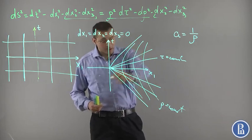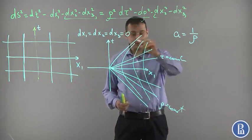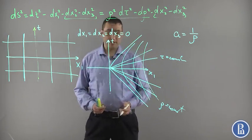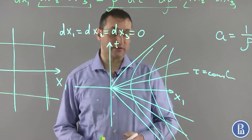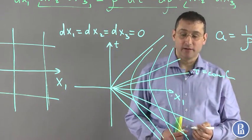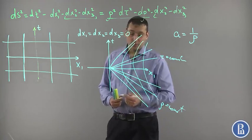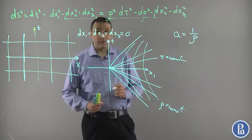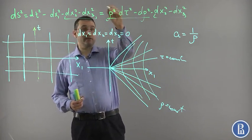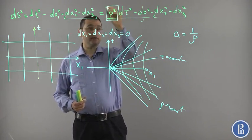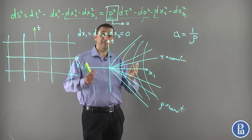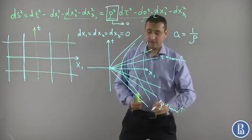That is the reason I refer to this metric as a metric describing what is going on in constantly accelerated motion. Now there is an important issue corresponding to this metric: it degenerates when rho goes to zero. What is the physical meaning of this degeneracy?